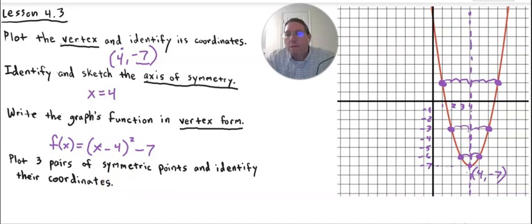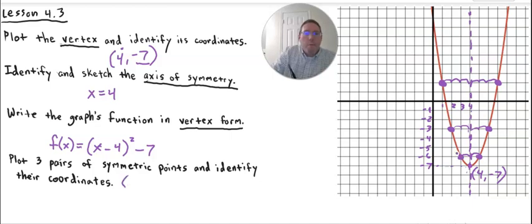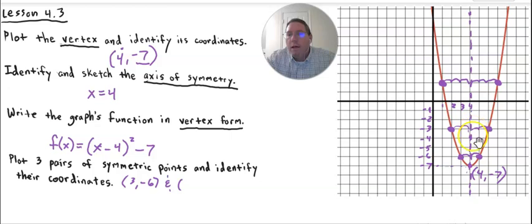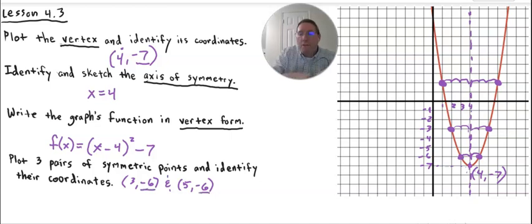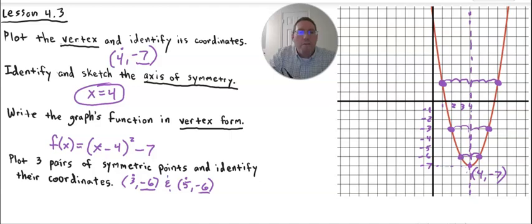Let's identify the coordinates. The first pair: one point is at (3, −6), and its symmetric partner is at (5, −6) — same y-value. Notice three is one unit away from the axis of symmetry at x = 4, and five is also one unit away. The second pair: one point is at (2, −3), and its symmetric partner is at (6, −3). Two is two units away from four, and six is also two units away.